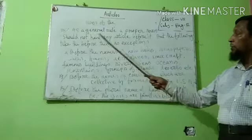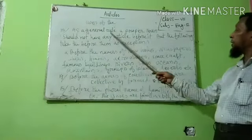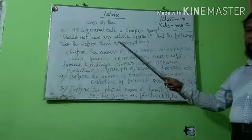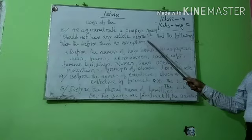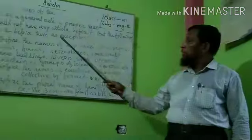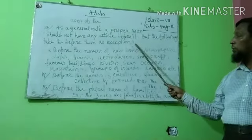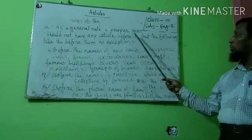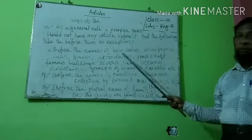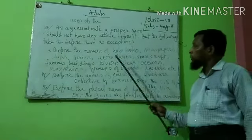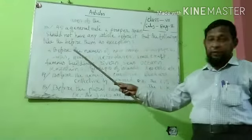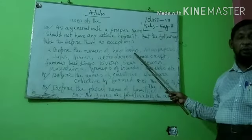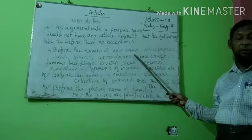Number thirteen: as a general rule, a proper noun should not have any article before it, but the following take THE as exceptions: before the names of holy books — example: the Quran, the Bible, the Gita, etc.